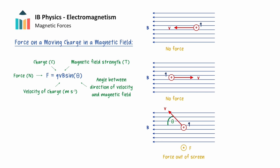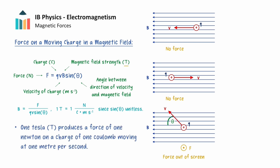The SI unit for the magnitude of the magnetic field strength, also called magnetic flux density, B, is the tesla. We can rearrange this expression for B to see how the tesla relates to the other units. Since sin theta is unitless, we find that a magnetic field strength of one tesla produces a force of one newton on a charge of one coulomb moving at one meter per second.